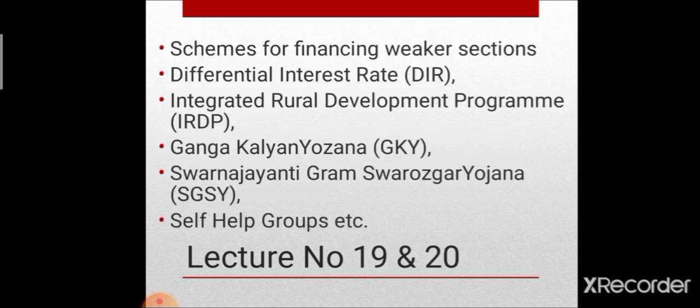Lecture numbers 19 and 20 are based on schemes for financing the weaker section. These schemes are: DIR scheme (Differential Rate of Interest scheme), IRDP (Integrated Rural Development Program), GKY (Ganga Kalyan Yojana), SGSY (Swarna Jayanti Gram Swarozgar Yojana), and Self Help Groups. These are the different schemes for the weaker section.